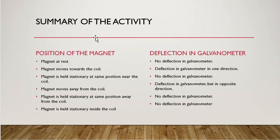Now what was the summary of the activity? If we put the magnet at rest, no deflection. If the magnet is moving in either the north pole or south pole direction, there will be a deflection in a specified direction. If the magnet is stationary at the same position or away from the coil, no deflection.